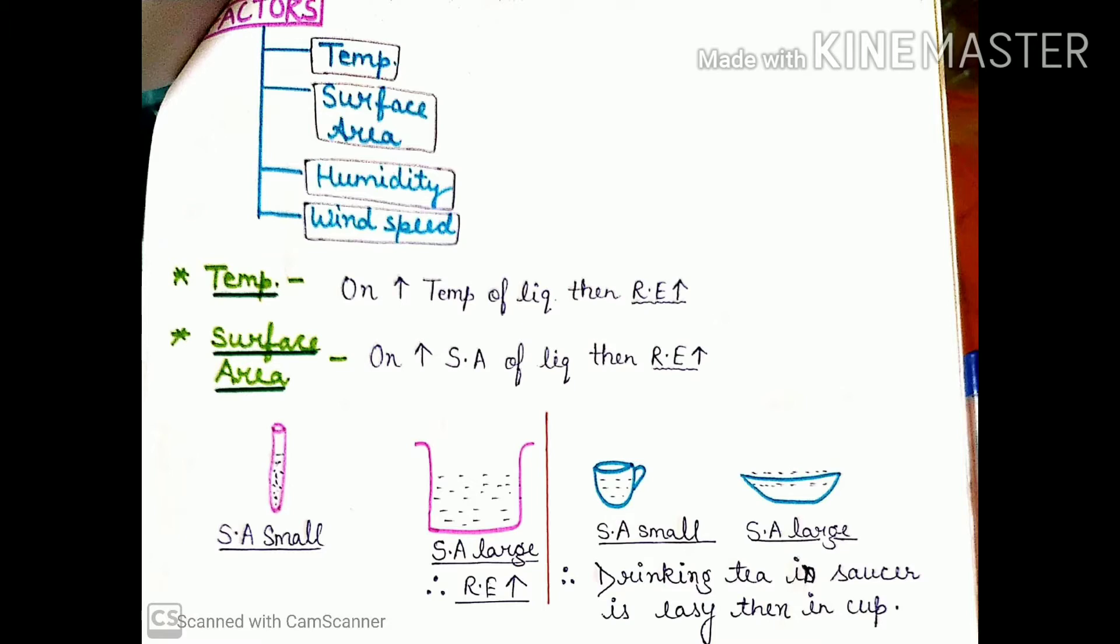We can see which factors affect evaporation. First factor is temperature, next one is surface area, third one is humidity, and last one is wind speed. On increasing the temperature, rate of evaporation also increases. When you increase the temperature, the evaporation rate will increase.